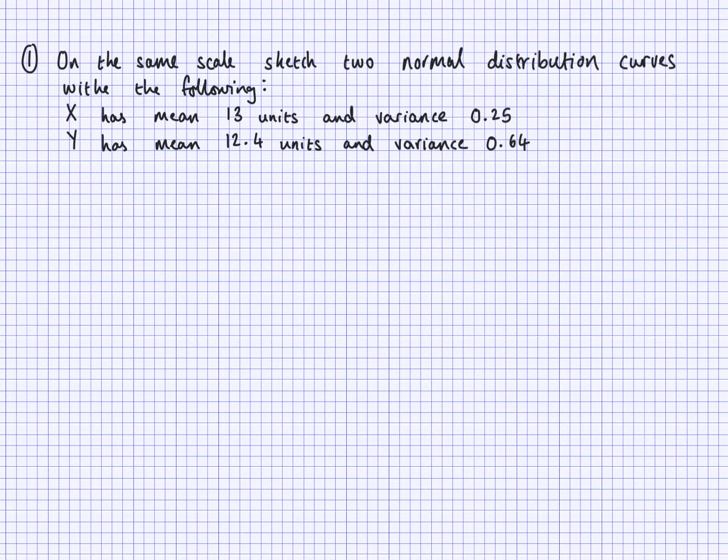Now here's a question for you to do. Just one question. So you have to sketch the normal distribution curves on the same scale for these two. So X has mean 13 units and variance 0.25. Y has mean 12.4 units and variance 0.64.